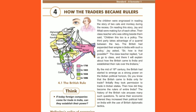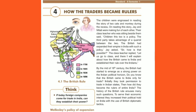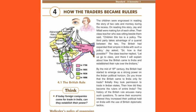The children were engrossed in reading the story of two cats and a monkey. Jay and Mitali were making fun of each other while reading. The class teacher sitting beside them said, 'This too is a policy — the third party takes the advantage of a quarrel between two.' The British also had this policy.